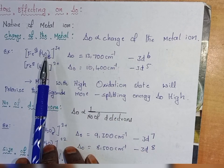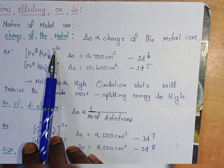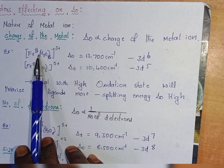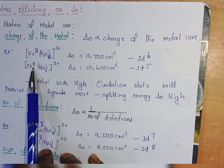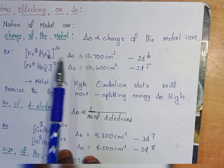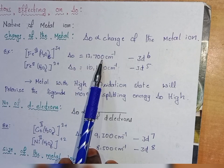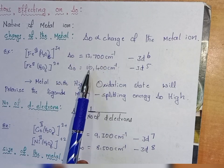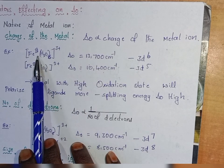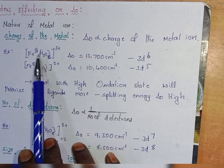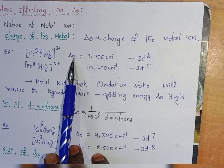For example, the hexa aqua iron complex with a +3 oxidation state has delta O of 13,700, whereas the same hexa aqua iron complex with a +2 oxidation state has delta O of 10,400. The metal iron with an increase in its charge will have a higher delta O.